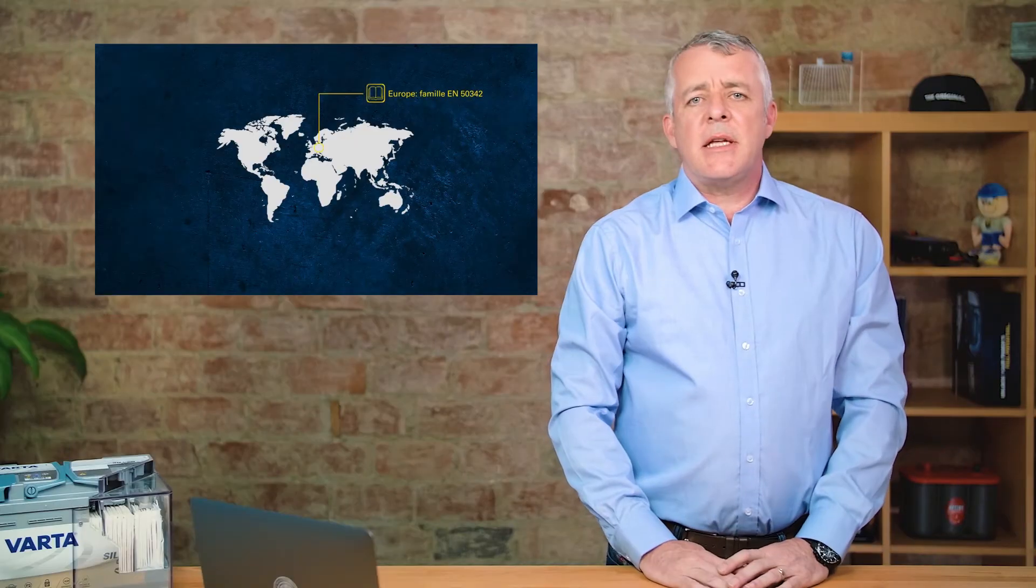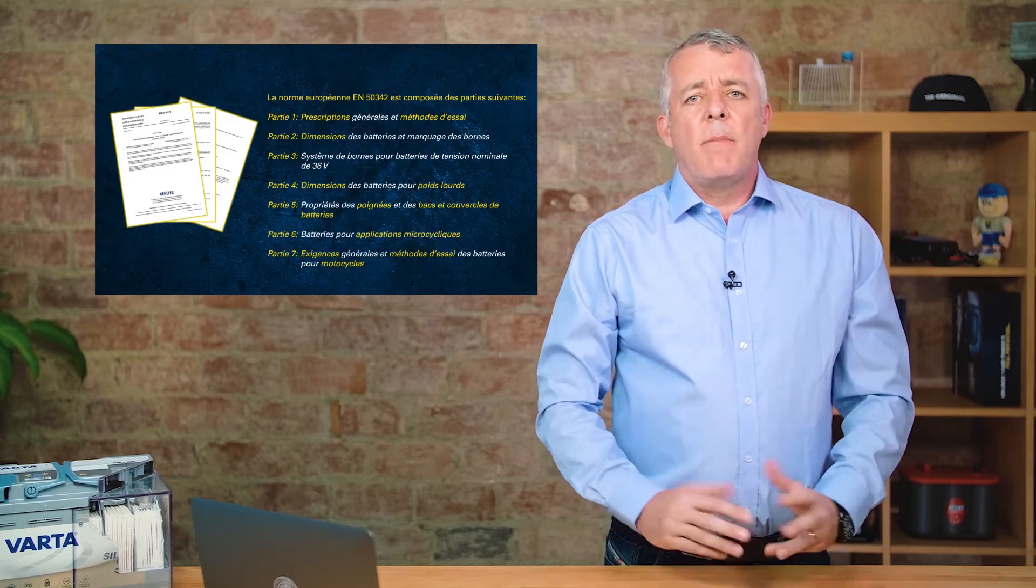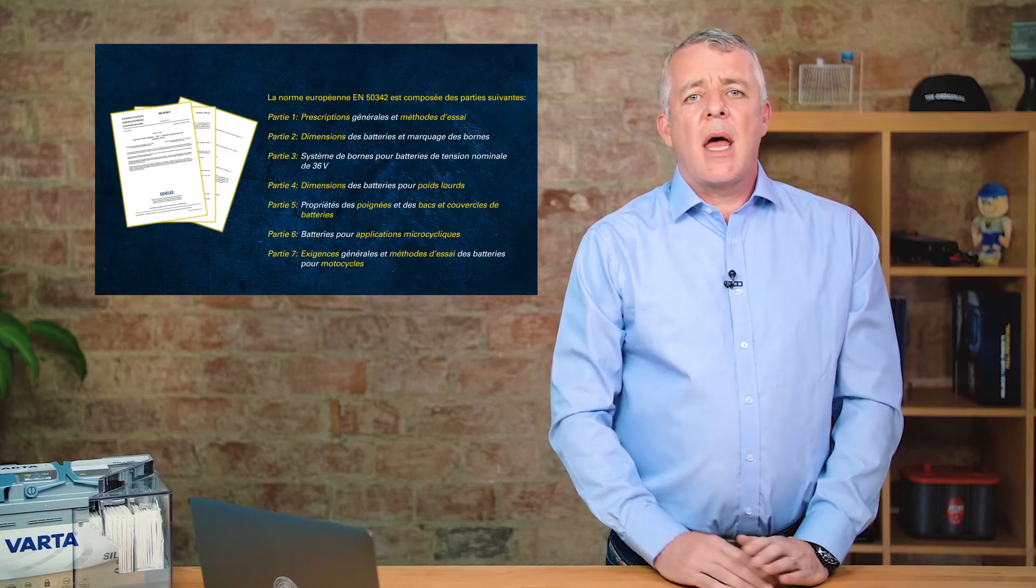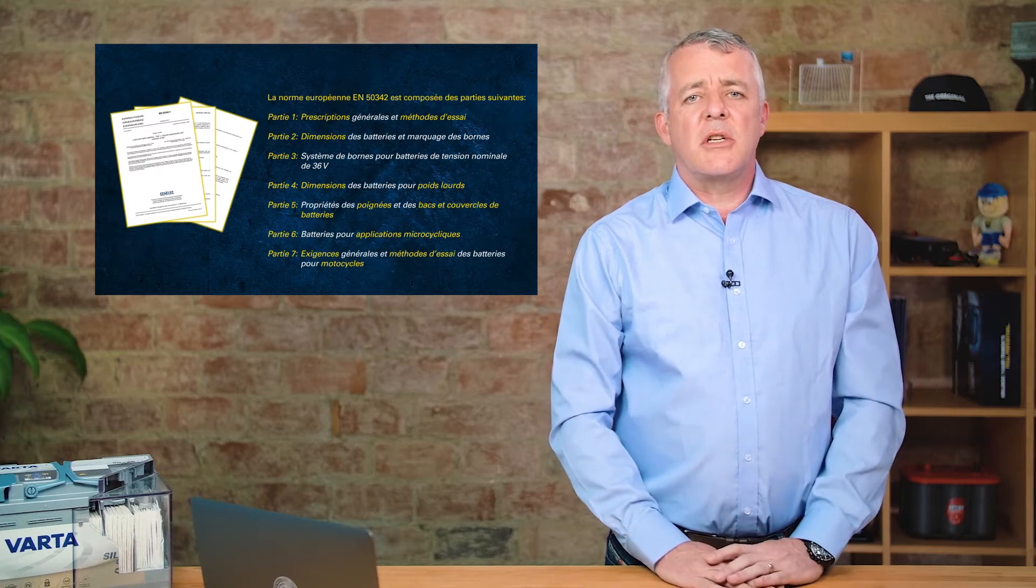EN is the important standard for us in Europe. It consists of seven different levels. Part one covers general test procedures and processes for batteries, and part six was introduced in 2015 to cover start-stop batteries.